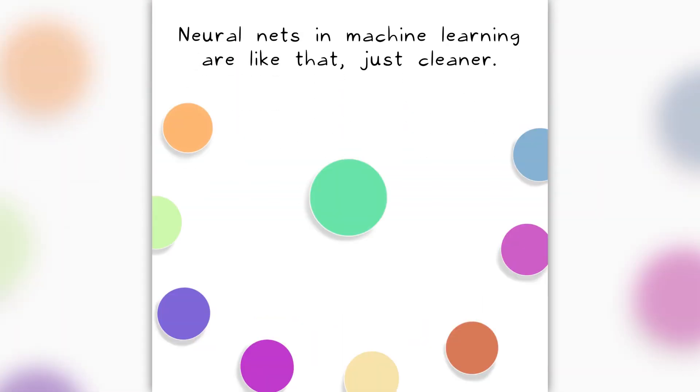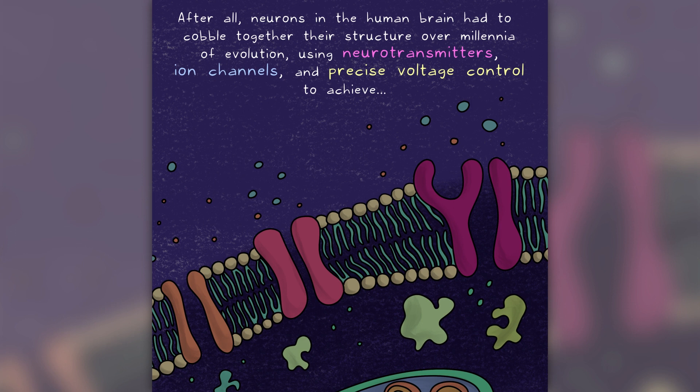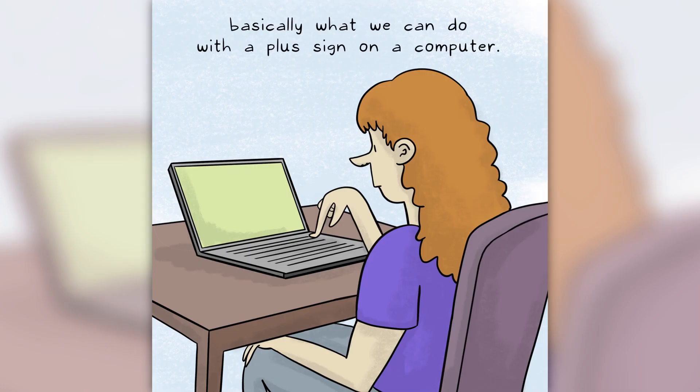Neural nets in machine learning are like that, just cleaner. After all, neurons in the human brain had to cobble together their structure over millennia of evolution, using neurotransmitters, ion channels, and precise voltage control to achieve, basically, what we can do with a plus sign on a computer.